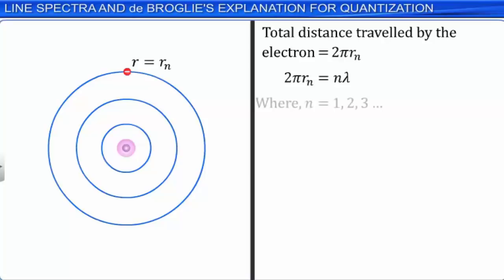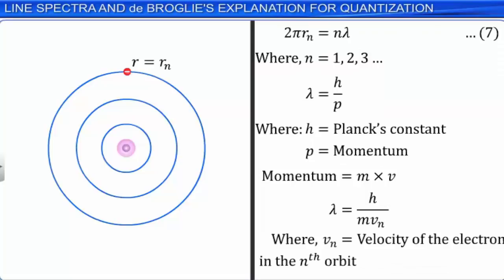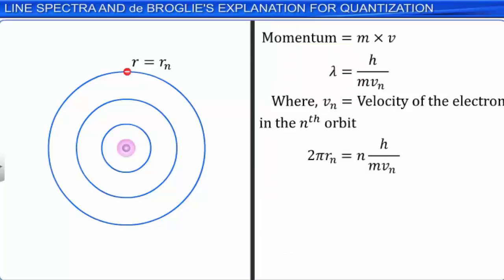We know that de Broglie's wavelength corresponding to the motion of a particle having momentum p is given by λ = h/p. As momentum is the product of mass m and velocity v, we have λ = h/(mvₙ), where vₙ is the velocity of the electron in the nth orbit. Substituting the value of λ in equation 7, we have 2πrₙ = nh/(mvₙ). Rearranging, we get mvₙrₙ = nh/2π — equation 8.